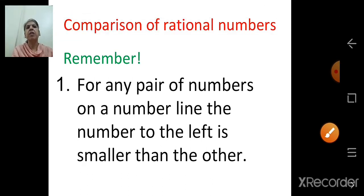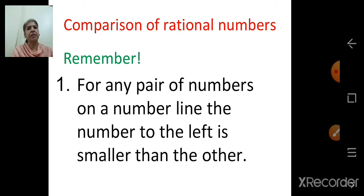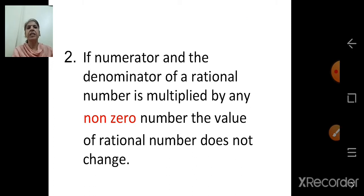Today we will study about comparison of rational numbers. Remember, for any pair of numbers on a number line, the number to the left is smaller than the other. For example, 0 lies to the left of the positive numbers, so 0 is smaller than the positive numbers. Similarly, negative numbers lie to the left of 0 and positive numbers.